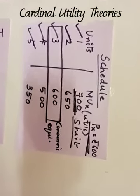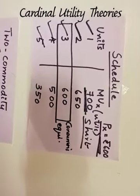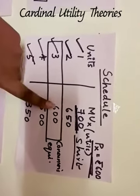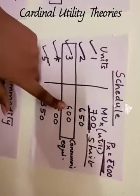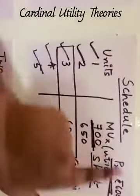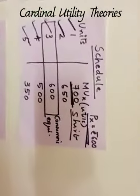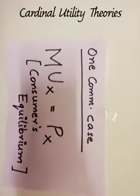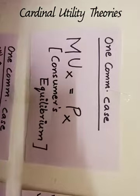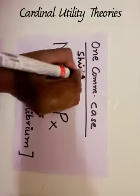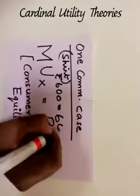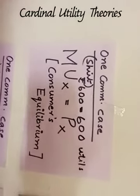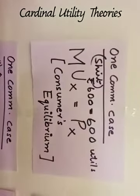This is consumer's equilibrium. In the fourth month and fifth month, he will not feel like buying the shirt, because in the third month he is already getting maximum satisfaction from buying a shirt. So, he is in equilibrium where MU of X is equal to P of X. The equilibrium condition for the one commodity case is MU of X equal to P of X. In our shirt example, Rs. 600 equals 600 utils.